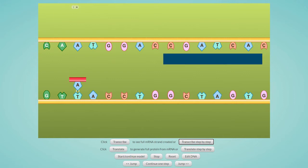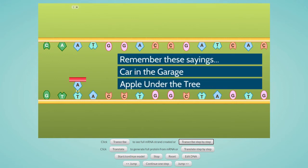The RNA strand will be built using the base pairing rules that are used in the process of DNA replication with one modification. RNA molecules will have a nitrogen base called uracil instead of thymine. Clicking on transcribe step by step shows us the A on the template strand will pair with the U.